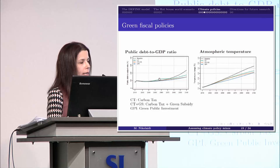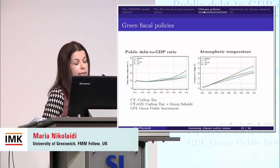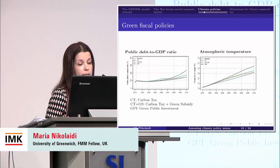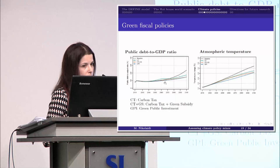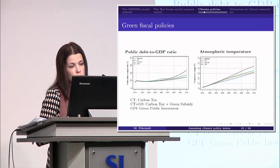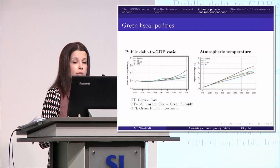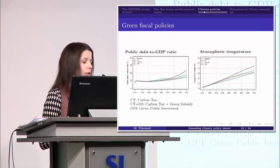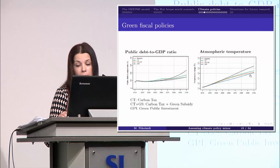In our simulations, when we have carbon taxes, yes, at the beginning we have an improvement in fiscal deficit, but the decline in economic activity overcompensates this, and as a result, at the beginning we have higher public debt-to-GDP compared to the baseline. When we implement green public investment, the debt-to-GDP goes down because economic activity growth is more important compared to the increase in debt. Regarding atmospheric temperature — when we implement carbon taxes, we obviously have a reduction. When we combine them with green subsidies, atmospheric temperature becomes even lower. And with public investment, we also have a decline in atmospheric temperature.